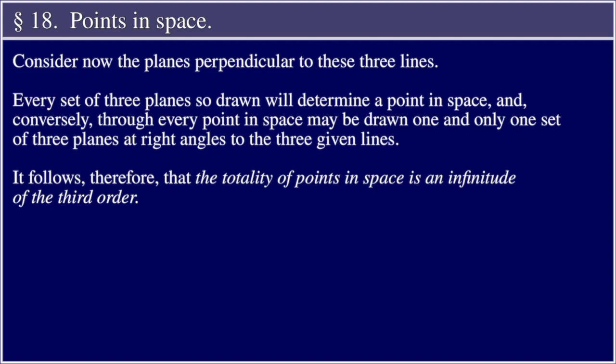Section 18. Consider now the planes perpendicular to these three lines. Every set of three planes so drawn will determine a point in space, and conversely, through every point in space may be drawn one and only one set of three planes at right angles to the three given lines. It follows, therefore, that the totality of points in space is an infinitude of the third order.